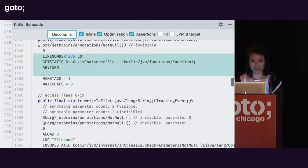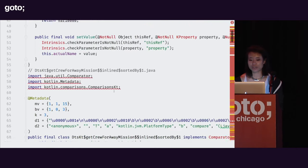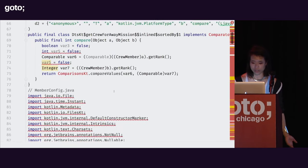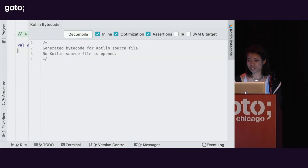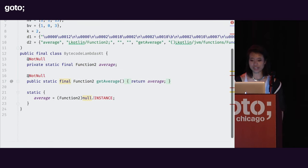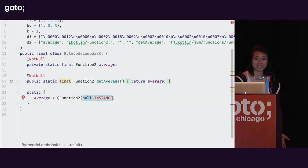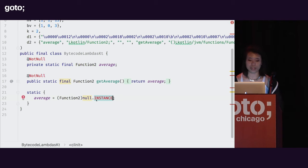I'll often decompile down to Java from the Java bytecode just to see what's really going on under the hood. Something interesting you'll see if you're looking at a class with a lambda and you decompile back to Java is 'null.instance'. What happens is the decompiler for brevity will often omit the names of those internal classes that get generated, and it comes out as null — but this is that singular instance we saw in the bytecode of our lambda.